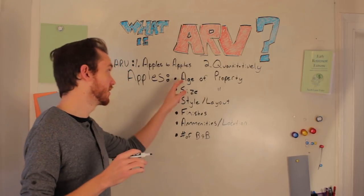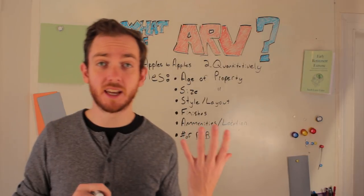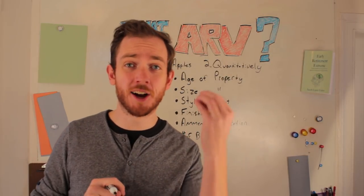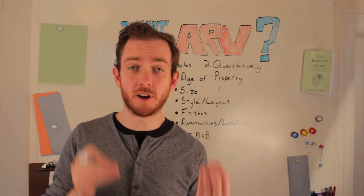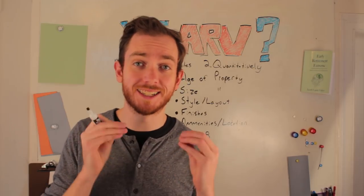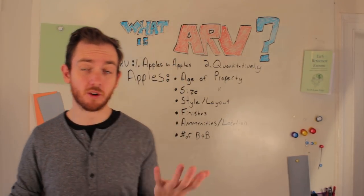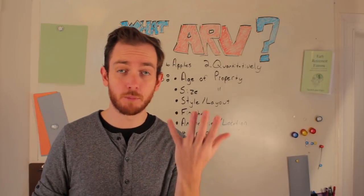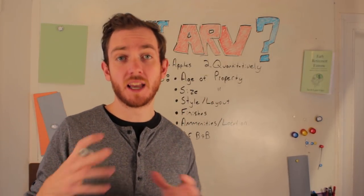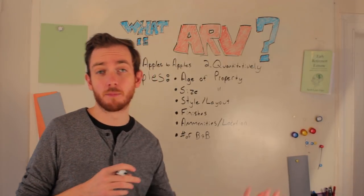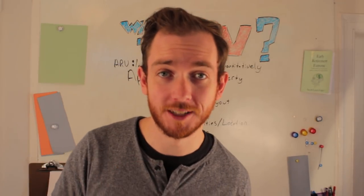When talking about the age of the property, you're trying to find apples-to-apples comparisons. It doesn't really make sense to take a property that was built 100 years ago and compare it to a property that was built only 10 years ago — they're going to be functionally and structurally significantly different. So when finding a great comparison for property A, there's no sense in looking at property B as a comp if it's 100 years older.